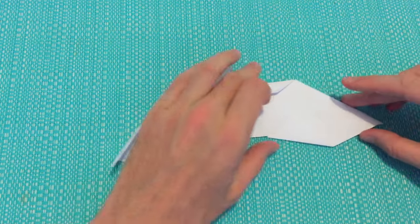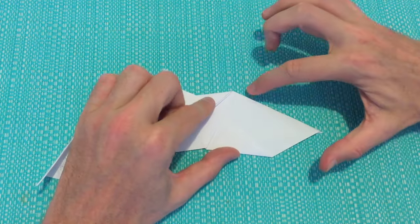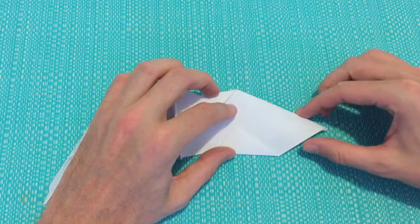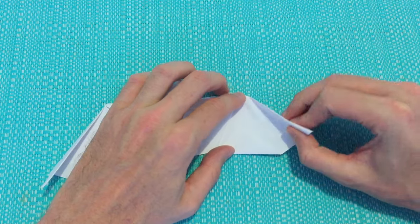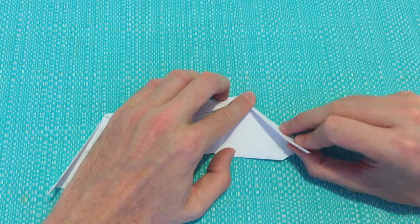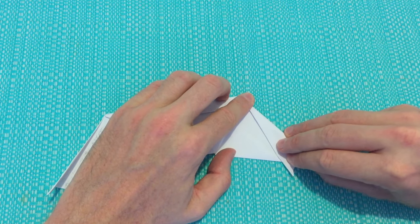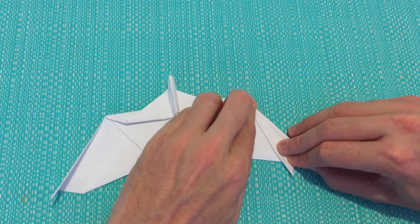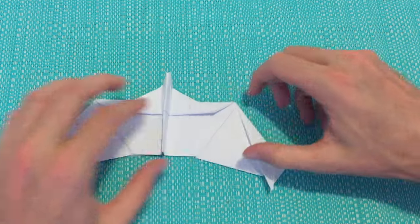Then we're going to do the same for the other side. So making sure the fold goes from the top point here down to the edge of the triangle. So we'll bring in the right hand tip, make sure the fold starts right at the top, touch the edge of that triangle down the bottom, and then create the crease.